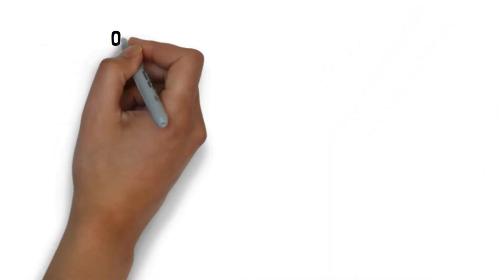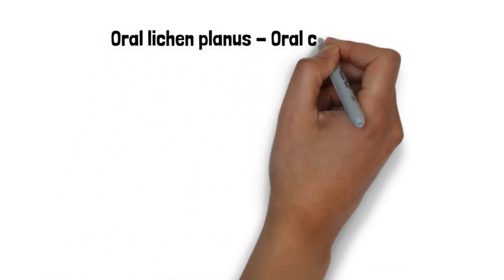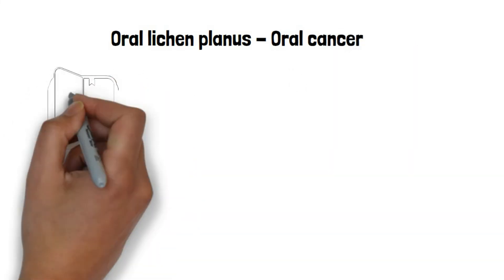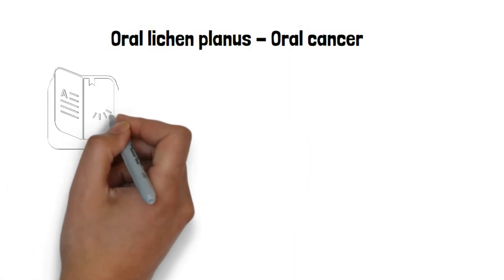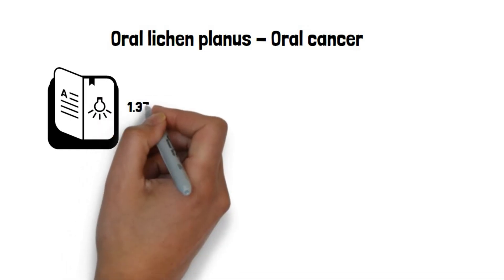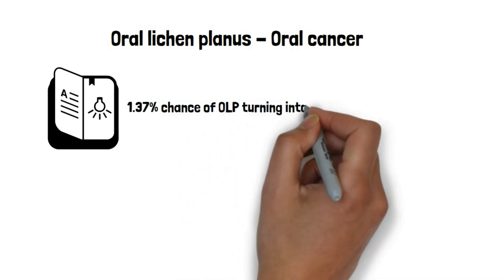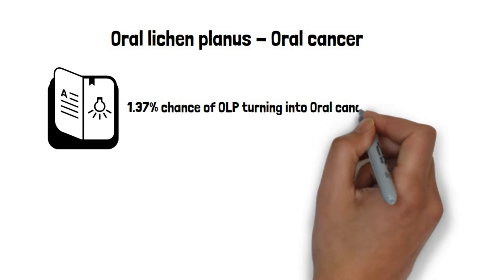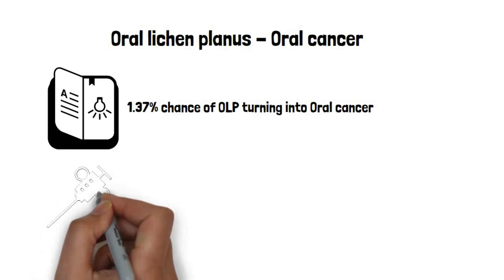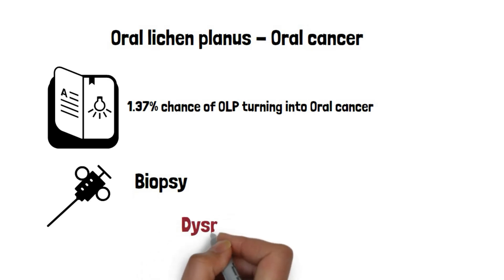The probability of oral lichen planus transforming into oral cancer can never be neglected. In a recent article published in the Journal of Oral Disease, a systematic review on the malignant transformation rate found a 1.37% chance of oral lichen planus turning into malignancy. Though the number appears small, the impact on oral cancer is profound. It is good practice to undergo a biopsy, which gives a clear idea of the stage of dysplasia — a measure of malignancy.